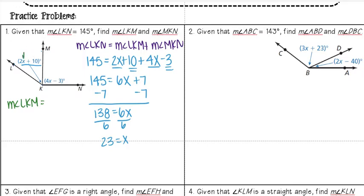So I have 2 times 23 plus 10. Well, 2 times 23 I get 46, and so I get 56 degrees.